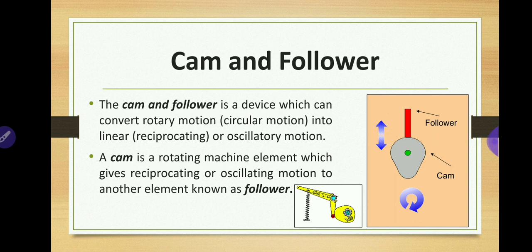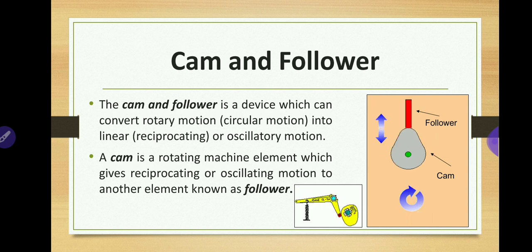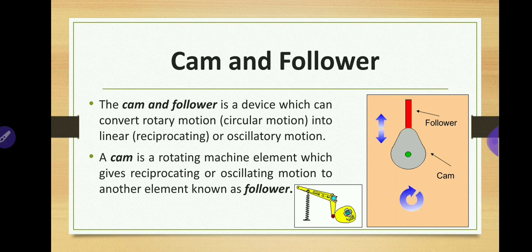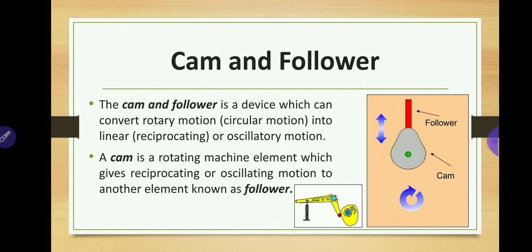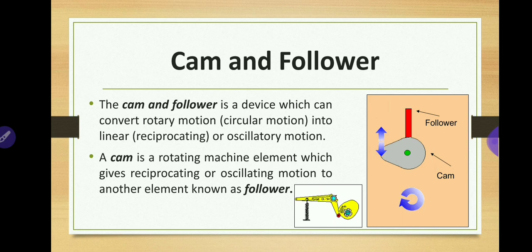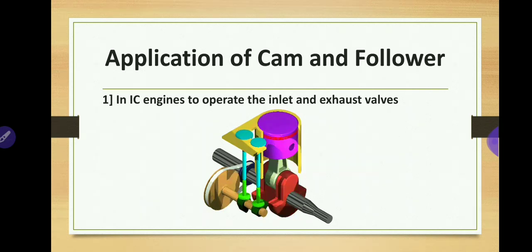When a cam is rotated about its profile, the follower makes contact, and that contact is uniform — it is not broken. That contact can be made precise with the help of a spring or a dead weight attached over the follower. When a cam rotates, the follower can oscillate about its fulcrum point. So any motion — linear or oscillatory — can be given to the follower while the cam rotates about its own shaft axis.